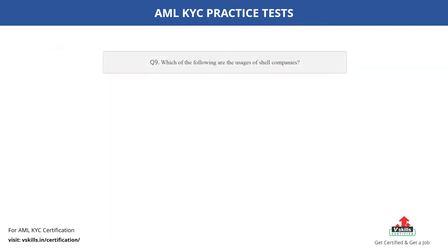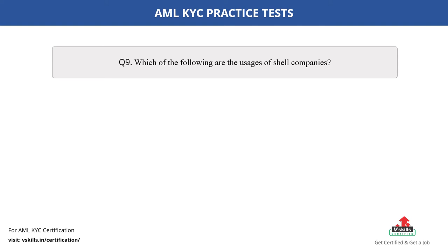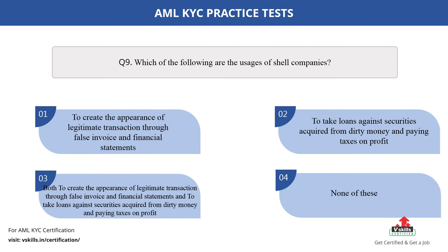Question number 9. Which of the following are the usages of shell companies? The options are: A. To create the appearance of legitimate transaction through false invoice and financial statements; B. To take loans against securities acquired from dirty money and paying taxes on profit; C. Both — to create the appearance of legitimate transaction through false invoice and financial statements, and to take loans against securities acquired from dirty money and paying taxes on profit; D. None of these. The correct answer is option C.